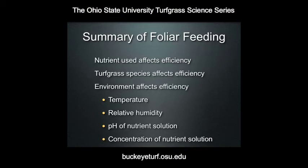If the pH is too high or too low, that nutrient element can actually be bound up in insoluble salts that would not be readily taken up by the leaf. Also, the concentration of the nutrient solution affects the efficiency of foliar feeding. As concentration increases, you increase the efficiency of nutrient uptake to a point. However, if you increase concentration beyond a certain critical point, you'll end up with too high a concentration, which will result in foliar burn. You want the concentration to be high enough to optimize uptake without burning the leaf tissue.